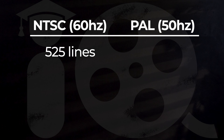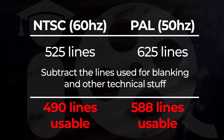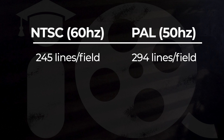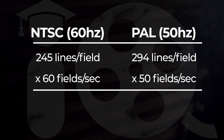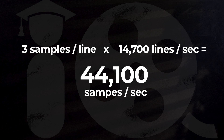Here's how the math works out. With NTSC there are 525 lines and with PAL there are 625 lines. We can't use the blanking lines — which is how the video signal syncs itself up — so we really only have 490 lines to work with in NTSC and 588 lines in PAL. Since interlace breaks the frames into two separate fields, we have 245 lines per field in NTSC and 294 lines in PAL. With NTSC being 60 fields per second and PAL being 50 fields per second, that gives us exactly 14,700 lines per second to encode our audio into. Since we want our sample rate to be higher than 40 kHz, we have to encode not just one sample per line but three 16-bit samples per line — and 3 times 14,700 equals 44,100 Hz.